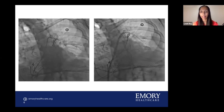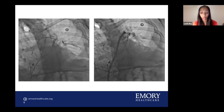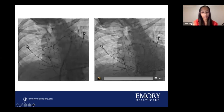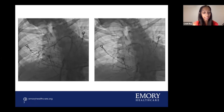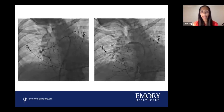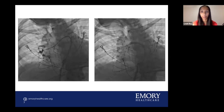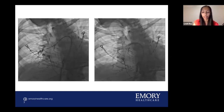We advanced a 20 French Flowtriever catheter into the left PA, and three runs of mechanical thrombectomy were performed. Repeat pulmonary angiogram demonstrated no significant residual thrombus burden. We then went to the right side — the angiogram showed filling defects and thrombi in the right distal PA with poor distal flow. Two to three runs of mechanical thrombectomy were performed there, and the post-procedure angiogram demonstrated no significant residual thrombus burden with much improved distal flow.